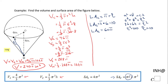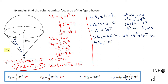Now we move to the surface area of the sphere. The formula is 4πr². So we have 4 times π times 6², which means 4 times π times 36, giving a surface area of 144π. However, be careful — we have just half of a sphere, a hemisphere. So we multiply by one-half, giving us 72π.